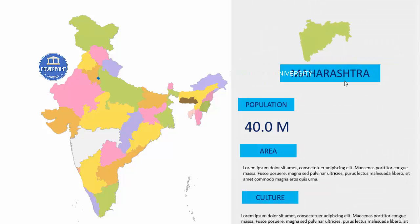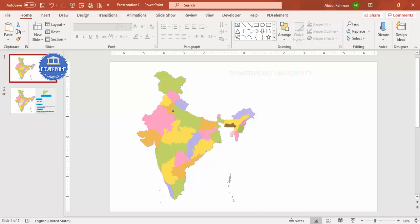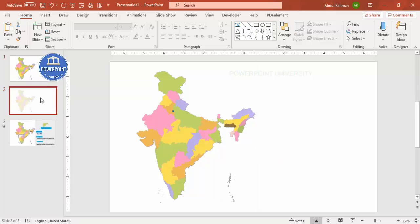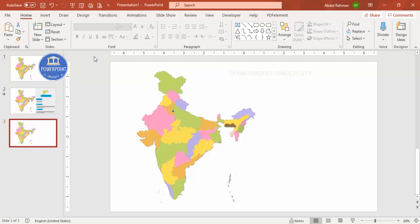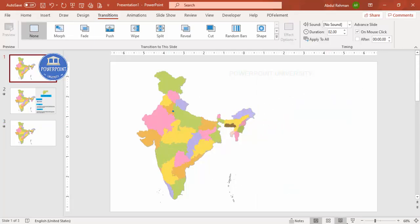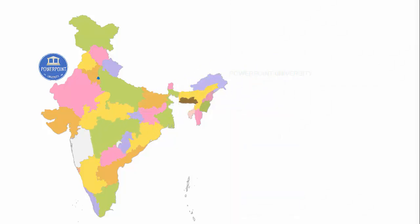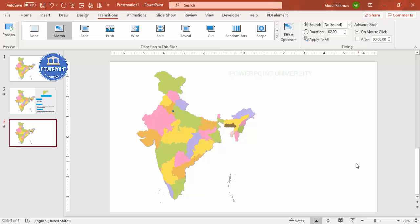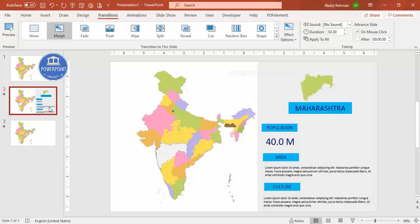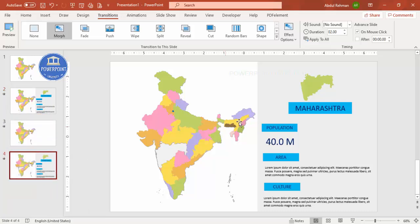When I play the slideshow: on click, the Maharashtra map comes out and we see the detail panel. The next slide I want is Maharashtra going back to its original position. So I'll duplicate this slide again, bring the state shape back to its original position, and apply Morph. Now when I play: click — it goes out to the detail view, then click again — it comes back. Then I want to explain another state.